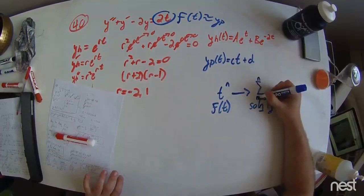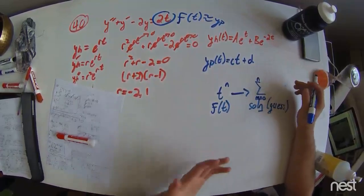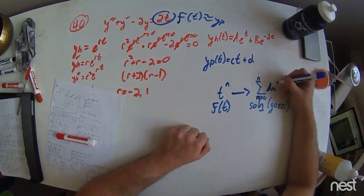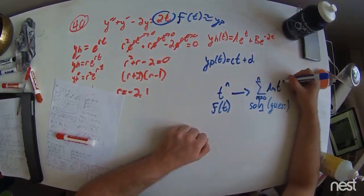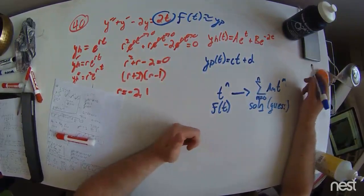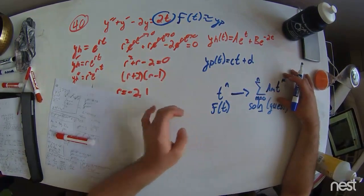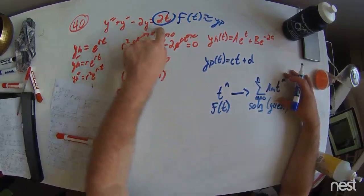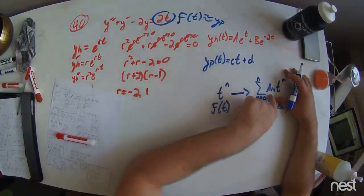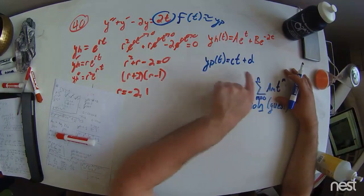To be a summation from n equals 0 to n. Oh, n equals 0, in order to have our indices correct, to the power n of a sub m, some constant, times t to the m. Now, this expression realized within this ODE, this problem, yields this right here, with a sub 0 being d and a sub 1 being c.